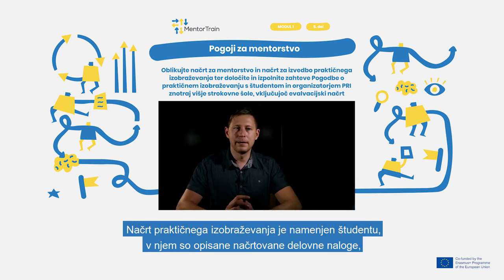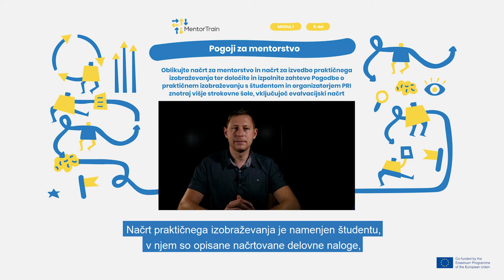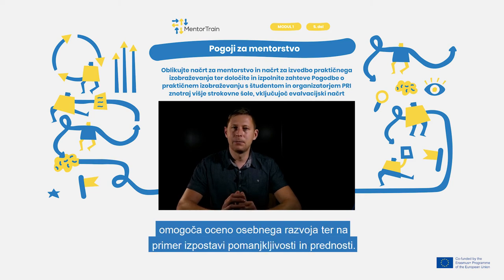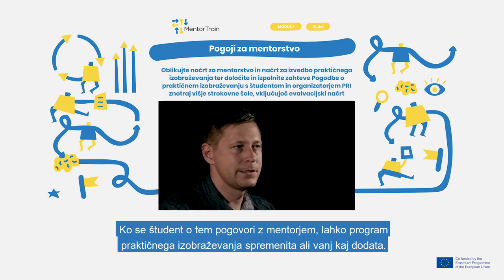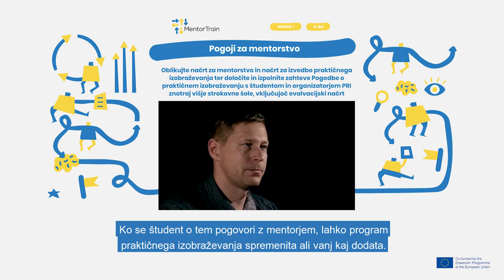The apprenticeship plan is for the apprentice, where they can see planned work tasks, evaluate their personal development, and bring out, for example, weaknesses and strengths. Discussing this information with the mentor, they can make changes or add something into the apprenticeship program.